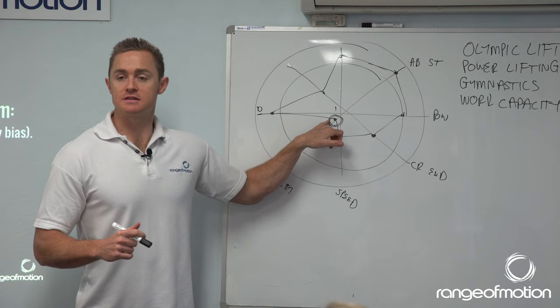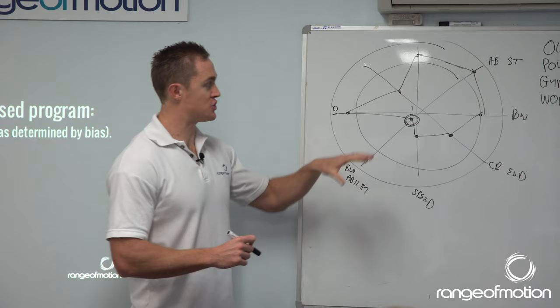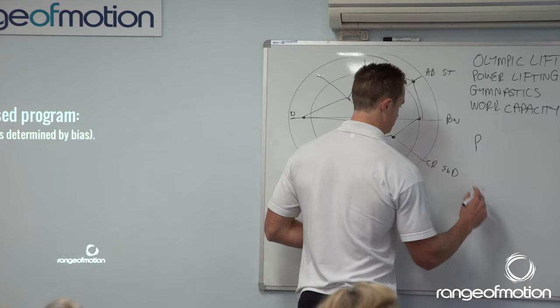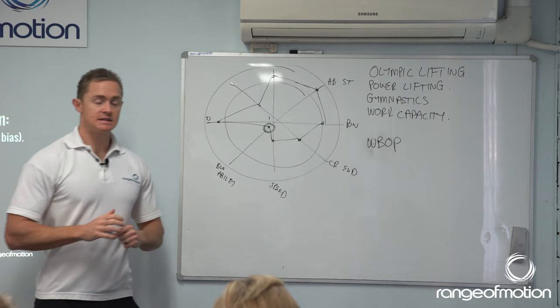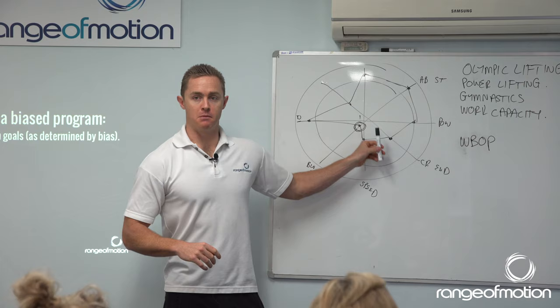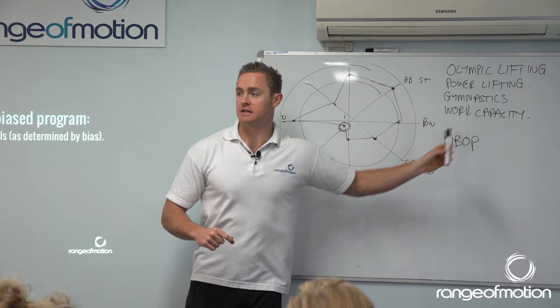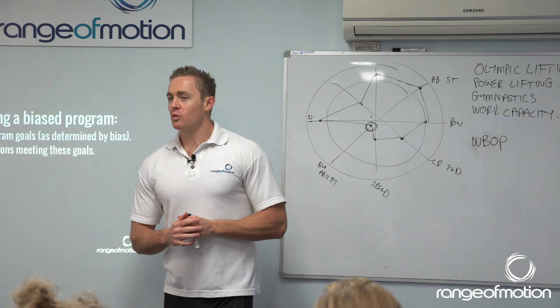So if we've got an athlete who is very strong, like maybe this athlete we've talked about, their profile is gonna be W for work capacity, then B for body weight, then O for Olympic lifting, and P for powerlifting. So that's their profile — W-B-O-P — from weakest to strongest, from most important to least important, from where you'll be spending most of your resources to where you'll be spending the least. Then we've gotta work out what type of session is going to improve each one.